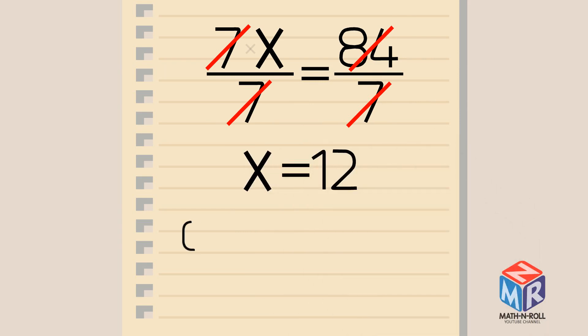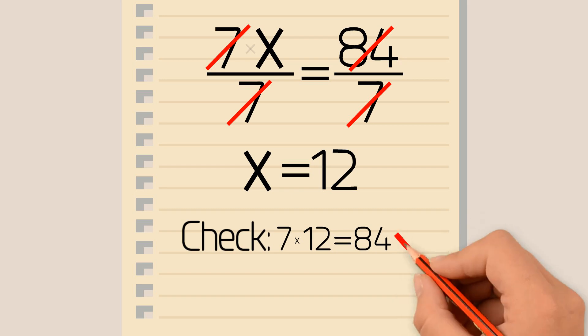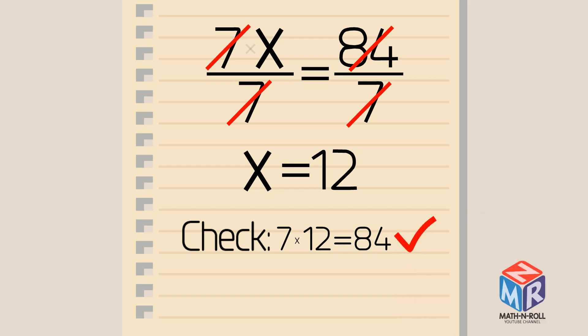Let's check our work. Plug in 12 for the x value. 7 times 12 equals 84, so our answer is correct.